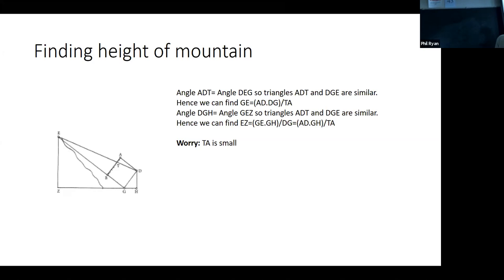And so you have a bunch of similar triangles. So this ADT triangle is similar to the DGE triangle, this big triangle here. And then this angle, DGH, this angle here has to equal GEZ, this angle here, right, because they're both complementary angles.